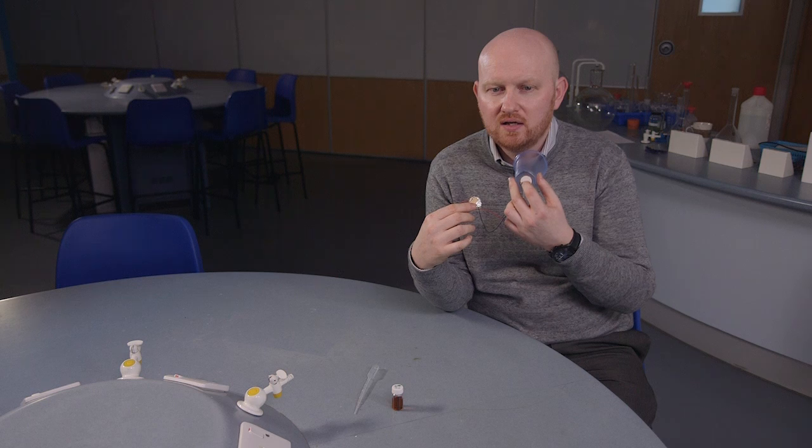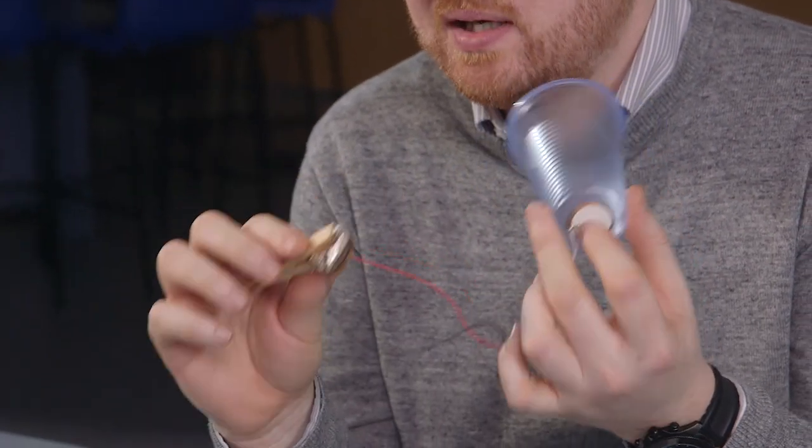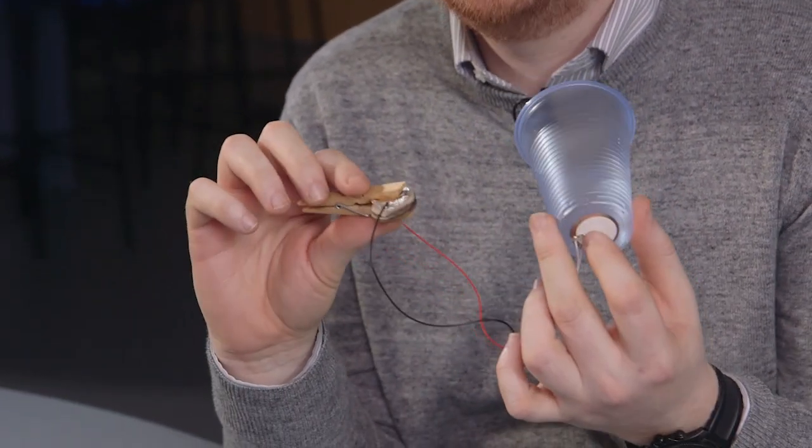And again, if I put it over my microphone there, you should be able to hear that sound really clearly. So the power to make that sound through the sound chip is being generated by a couple of bits of aluminium foil, two 2p coins, and a bit of makeup pad soaked in vinegar.